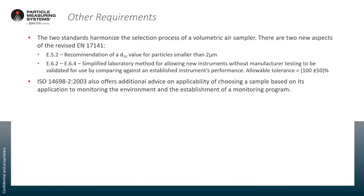The two standards harmonize the selection process of a volumetric air sampler. The new elements in EN 17141 are the D50 requirement for smaller than two microns and the simplified laboratory method. ISO 14698 also offers additional advice on applicability of choosing samplers based on their application to monitor the environment and the establishment of a monitoring program, so there's a little bit of flexibility in technique choice in 14698.